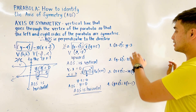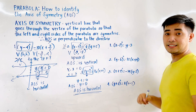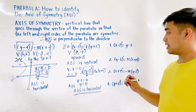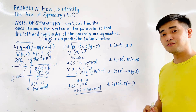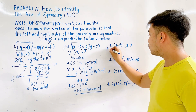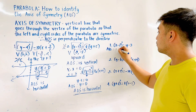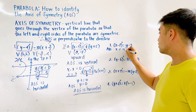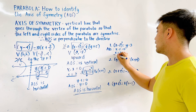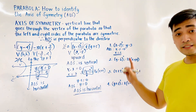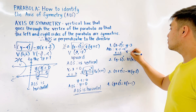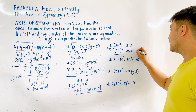We have exercises. For number 1, we are given (x − 2)² = y − 3. For the axis of symmetry, we have x − 2 = 0. Therefore, x = 2. That is the axis of symmetry. And since we have x, the graph of the axis of symmetry is vertical.